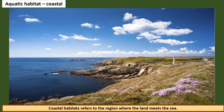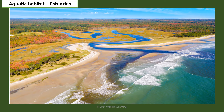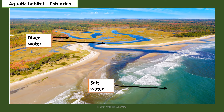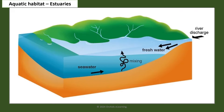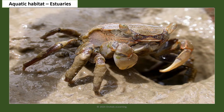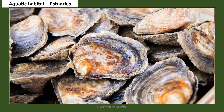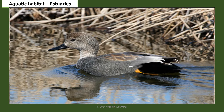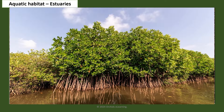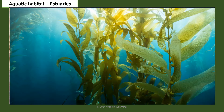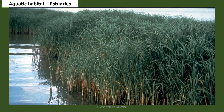Coastal habitats refer to the region where the land meets the sea — where salt water from the ocean mixes with fresh water from rivers. These unique habitats provide shelter to several marine animals and birds. Animals found here include crab, oyster, waterfowl, and worm. Plants include mangroves, seaweed, and marsh grasses.